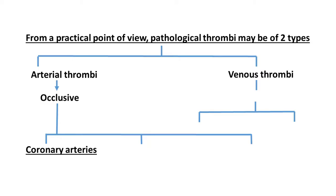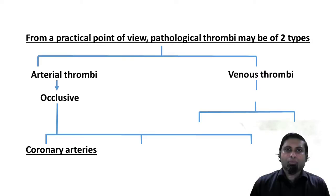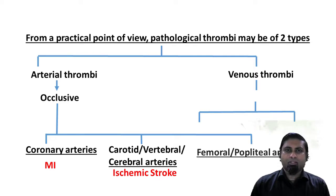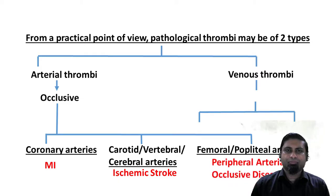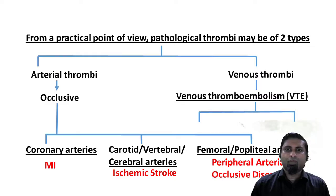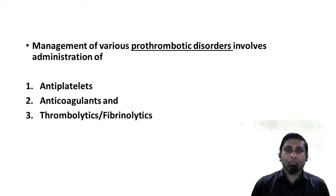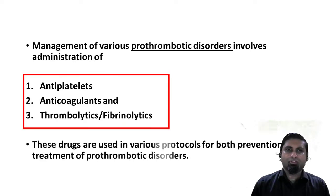When arterial thrombi occlude coronary arteries, the patient ends up with ischemic heart disease or myocardial infarction. When they occlude blood vessels supplying the brain, such as the vertebral artery, cerebral artery, or carotid arteries, the patient can end up with an ischemic stroke. Occlusion of the femoral or popliteal arteries results in peripheral arterial occlusive disease. Venous thrombi more commonly develop in the deep veins of the leg and embolize to cause pulmonary embolism. Management of these prothrombotic disorders involves antiplatelet drugs, anticoagulants, and thrombolytics or fibrinolytic drugs, administered in various regimens for both prevention and treatment.